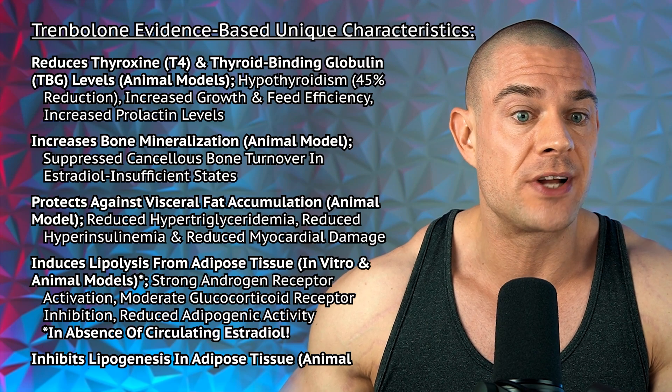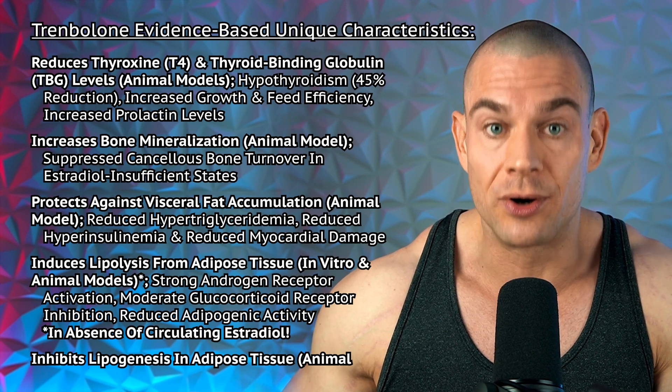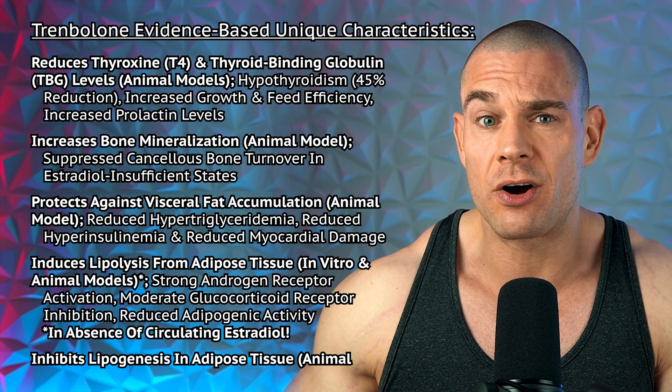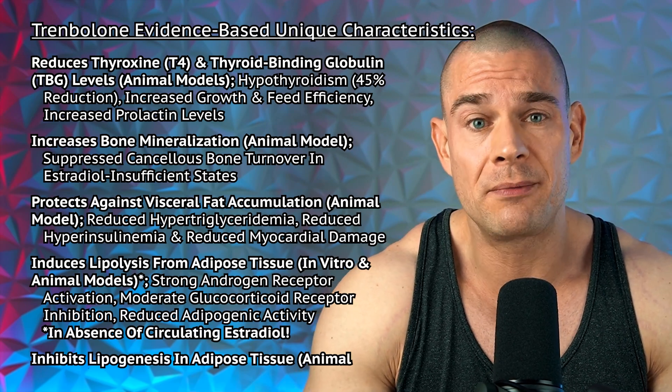But reduced thyroxine and thyroid-binding globulin levels can also increase prolactin levels and ultimately cause issues with your libido. This is all stemming from animal models. I'm not entirely sure if any of these animals were administered with iodine to sustain thyroxine production, or selenium to help with the conversion of T4 into T3, making it biologically active.